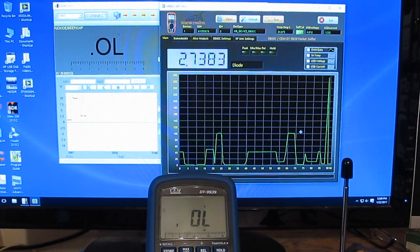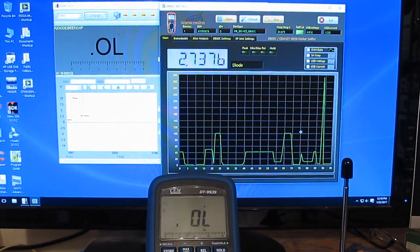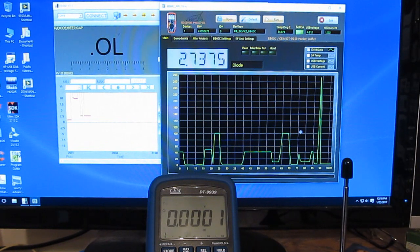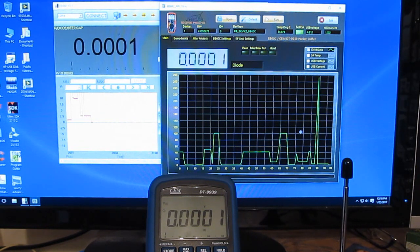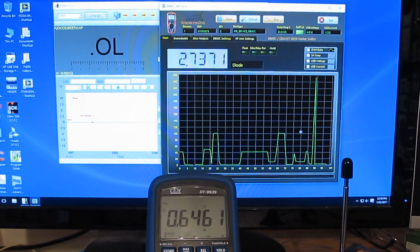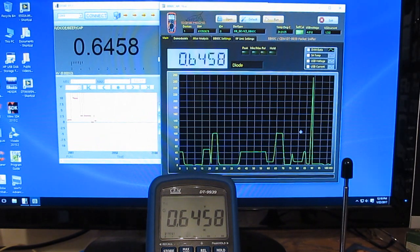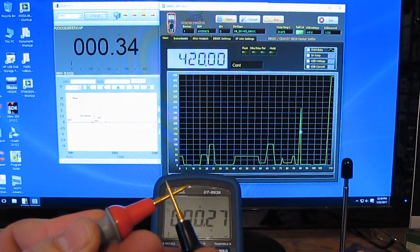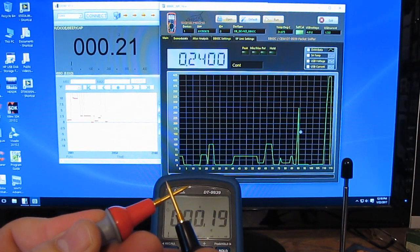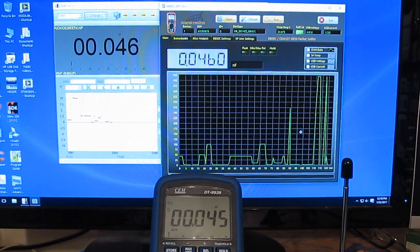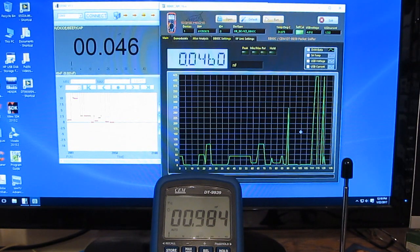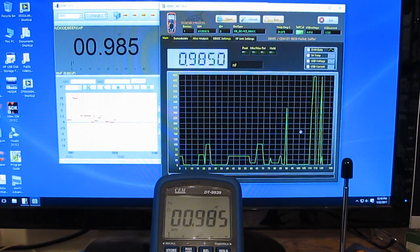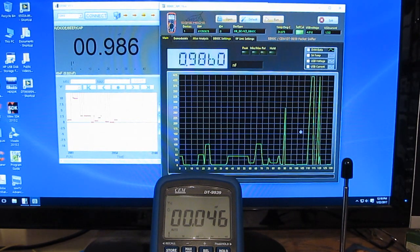This would be diode check mode. So this will be a short and a single diode. Continuity mode. This will be a 1 nF and a 0.1 microfarad.